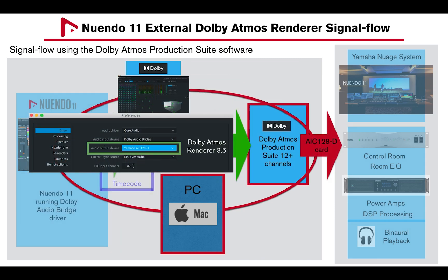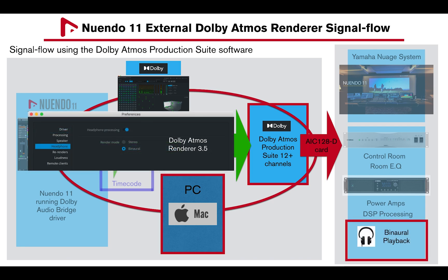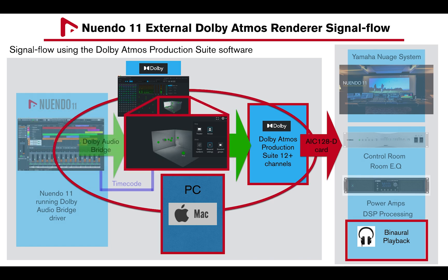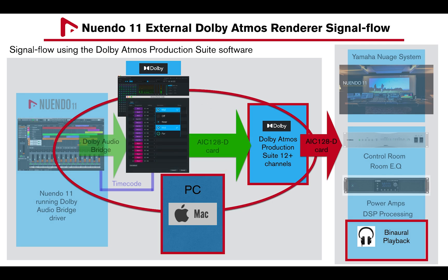Under Audio Output Device, a Yamaha AIC 128D card will be used. A headphone binaural rendering mode is available under Preferences, Headphone, and adjustable preferences are available in the Object View section and Binaural Renderer Mode window of the Dolby Atmos Renderer 3.5.